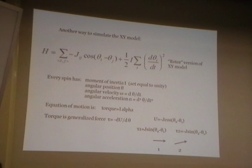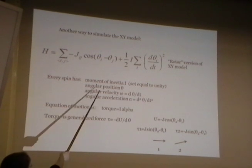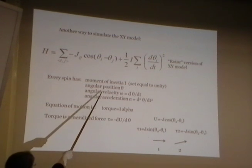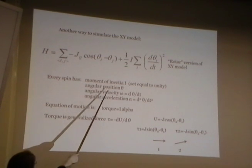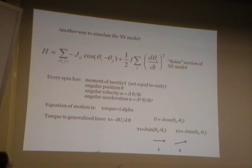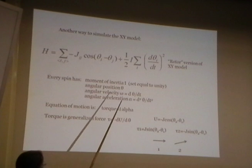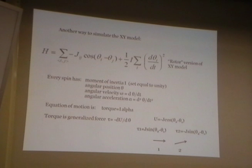In the Hamiltonian, we have potential energy and kinetic energy. The kinetic energy of a rotating body is one-half I omega squared — just like one-half mv squared but for rotation. Each spin has an angular position theta, an angular velocity omega which is the time derivative of theta, and an angular acceleration which is the second derivative.